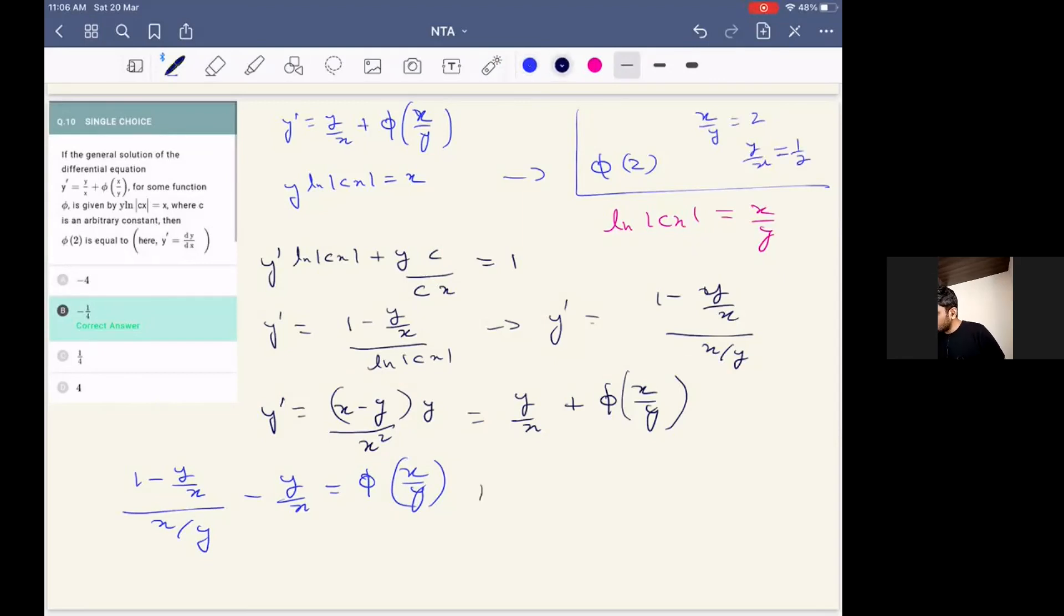So we put the values and we are going to get phi of two. This expression will be equal to one minus one by two, which gives us one by two minus one by two. So we can clearly see the correct answer will be this option.